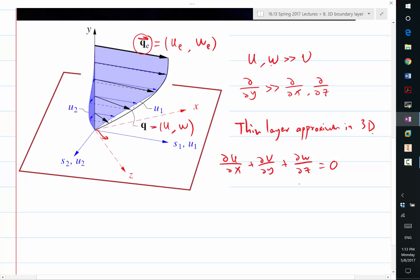And in here, we have again a lucky cancellation because v is very small, is much smaller than u and w, but partial partial y is much bigger than partial partial x and partial partial z. So all these three terms can be on the same order of magnitude. Therefore, we keep everything in the mass conservation equation.